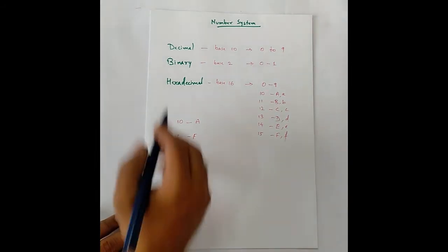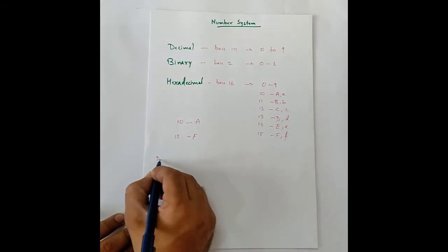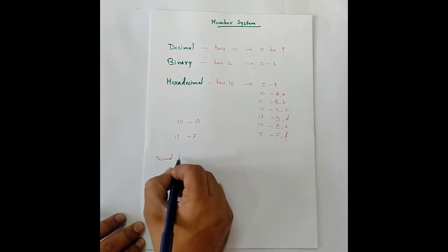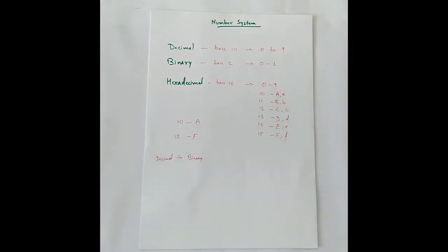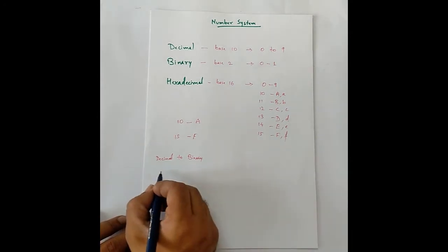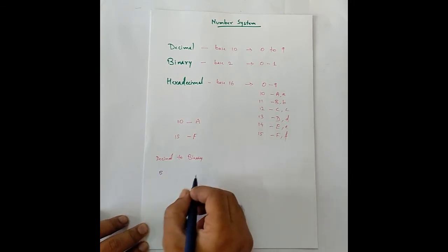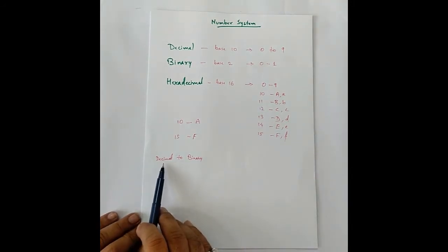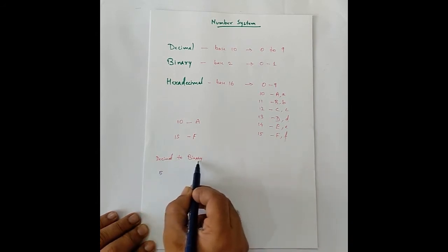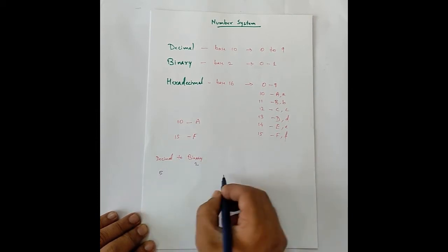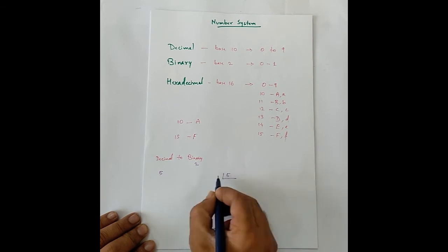Let's take an example of decimal to binary. In decimal to binary, we have to take a decimal number and convert it to its binary form. Let's take an example of 5. What we do is when we convert from this number to this, we divide this number with the base of binary. The base of binary is 2, so we take 5 and divide it by 2.